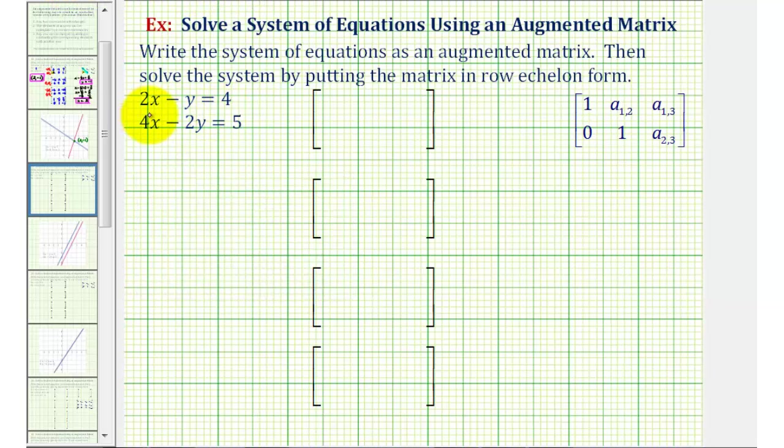So looking at the first equation, the first row would be two, negative one, four. The second row would be four, negative two, five.